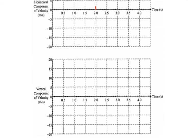For the vertical velocity graph, we start at positive 12 meters per second. At 1.2 seconds the ball reaches its highest point with vertical velocity of zero. The slope of this line is negative 10, because the slope of a velocity-time graph is acceleration, and acceleration due to gravity is negative 10 m/s². Continuing the straight line to 2 seconds gives a vertical velocity of negative 8 m/s, where we stop since the ball passes the fence.